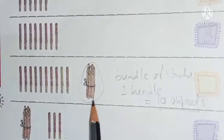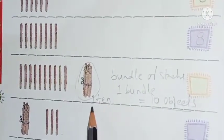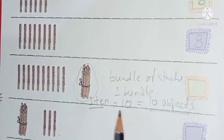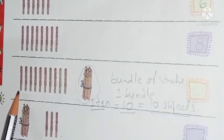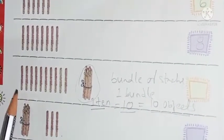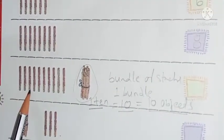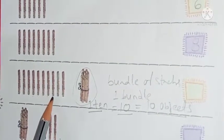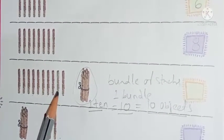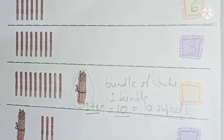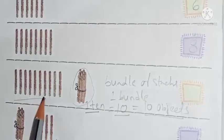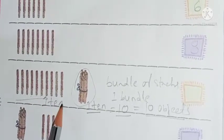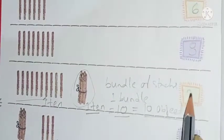So children, we will count these: 1, 2, 3, 4, 5, 6, 7, 8, 9, 10. So this is 10. This is 10. 1 ten equals 10. 1 ten — 20. So 1 ten means 10.